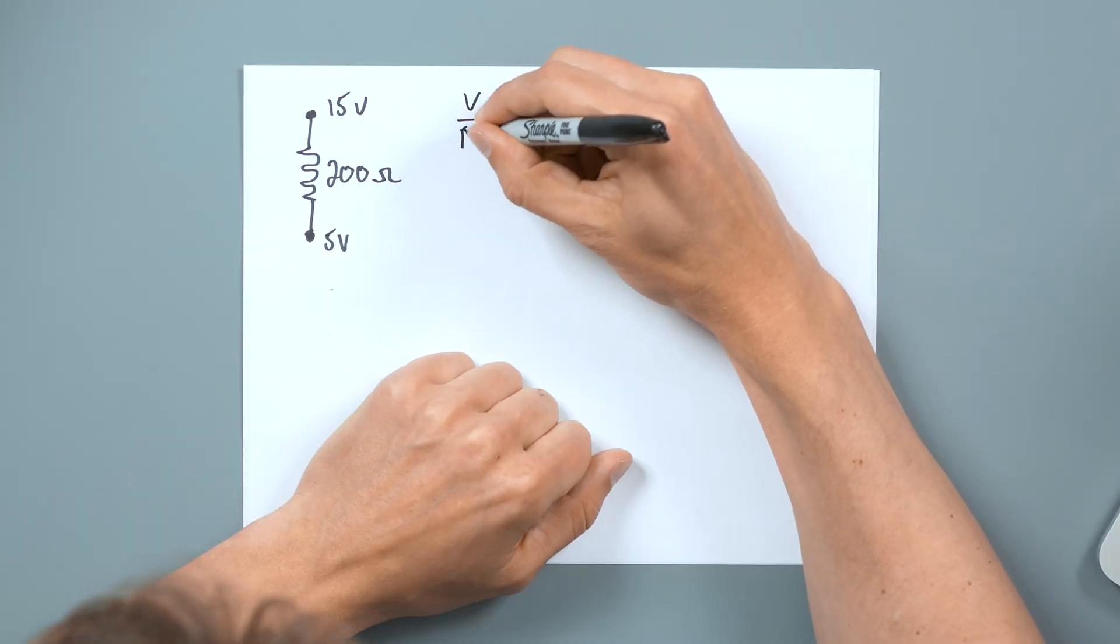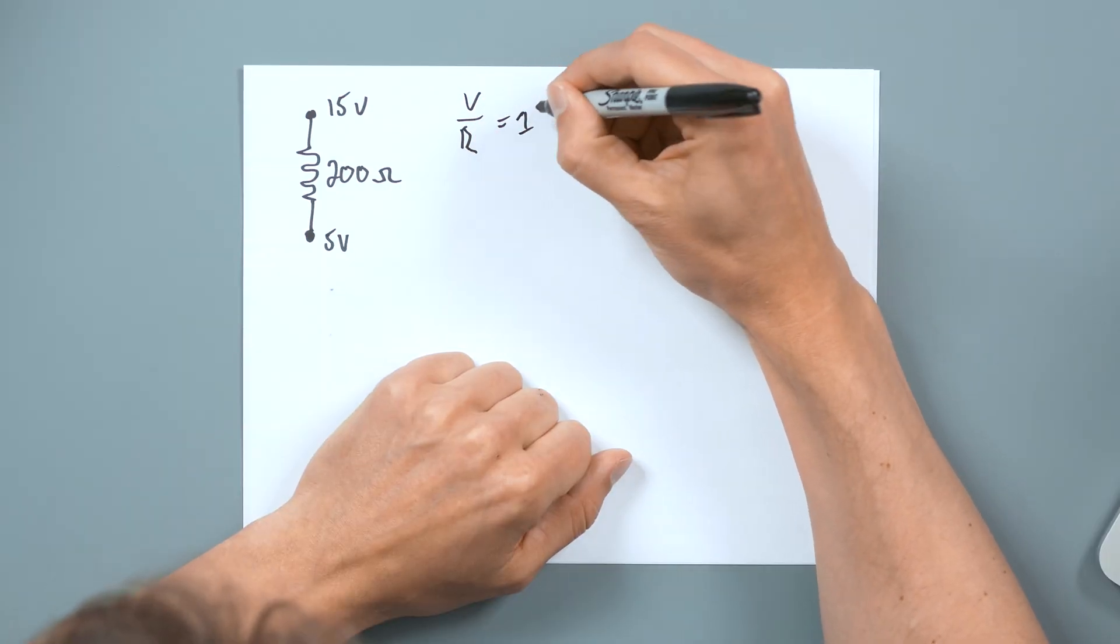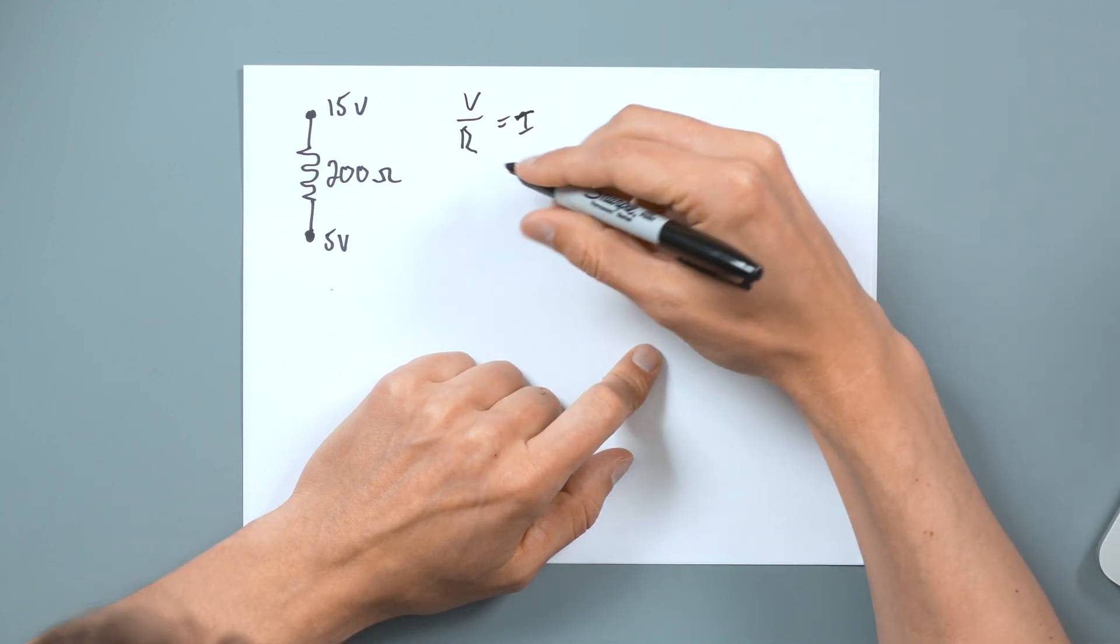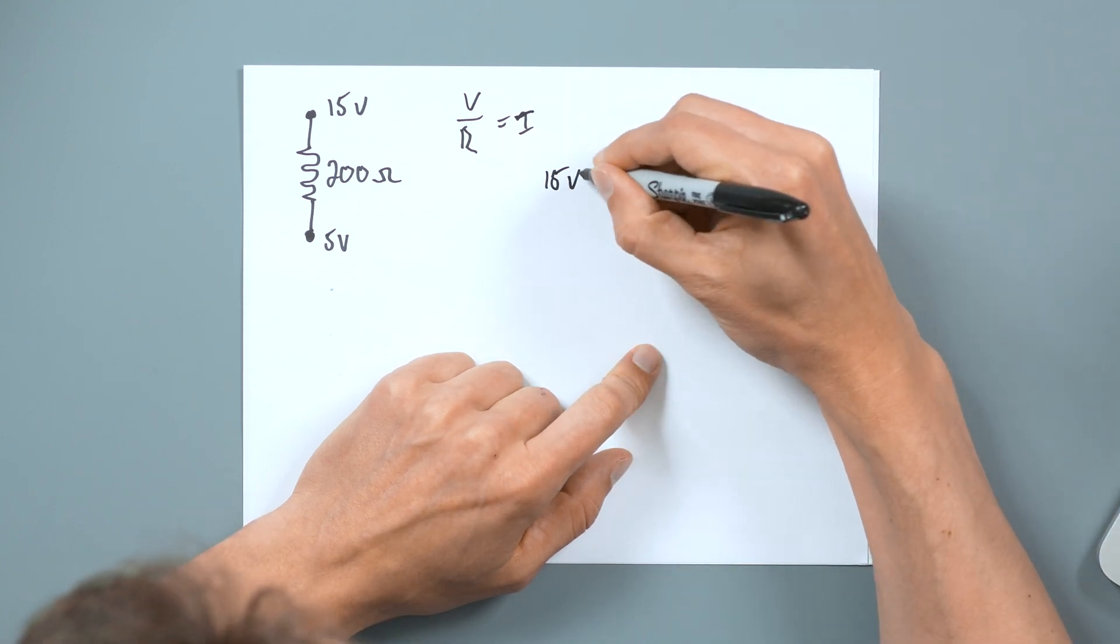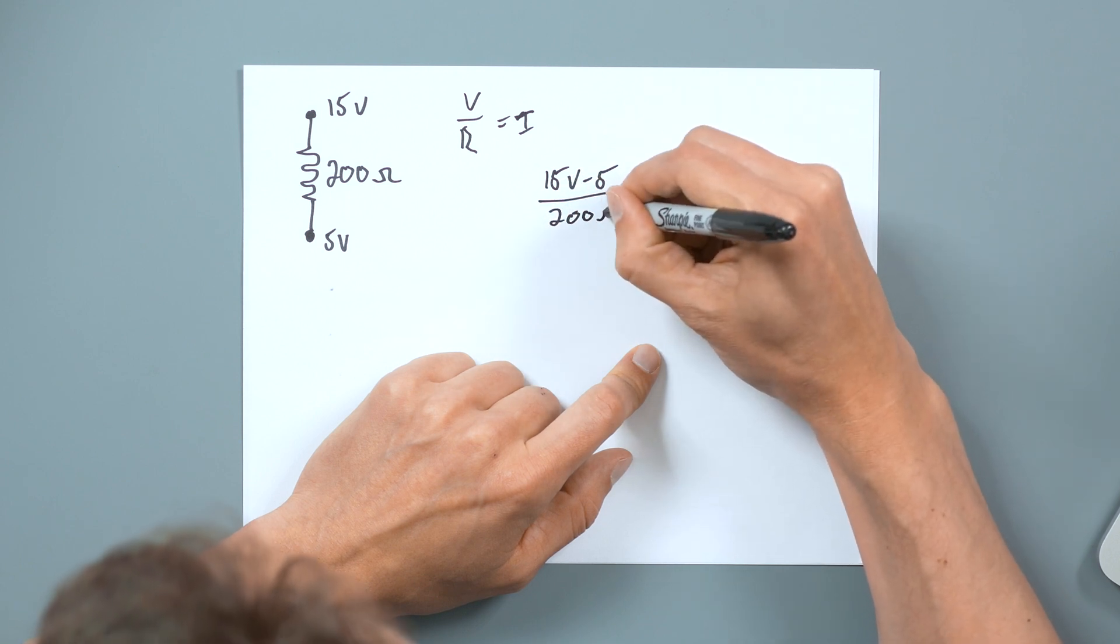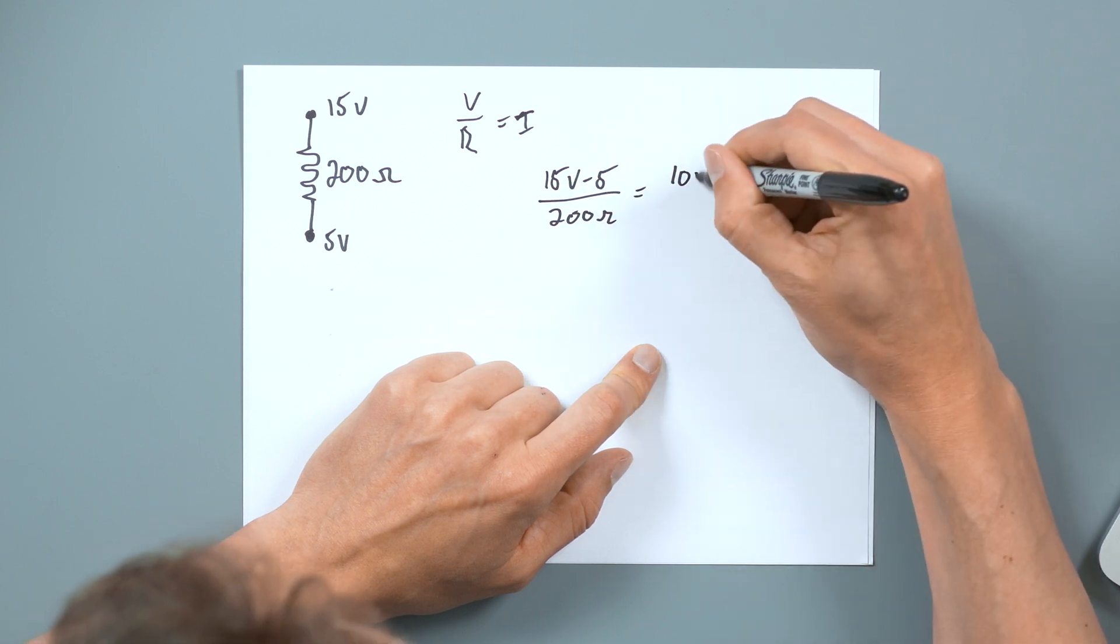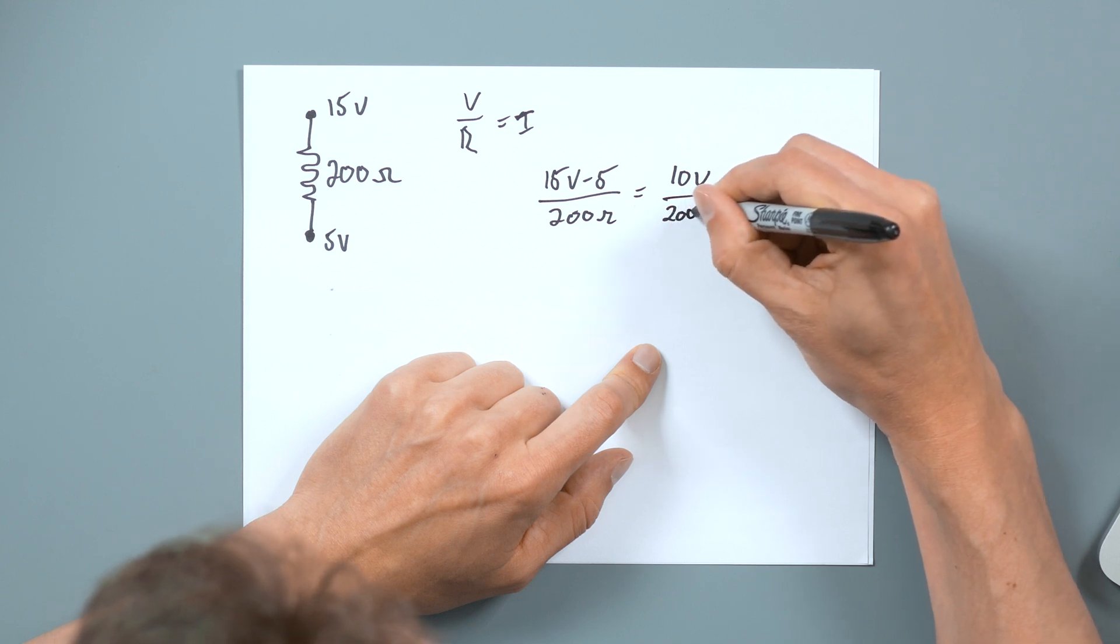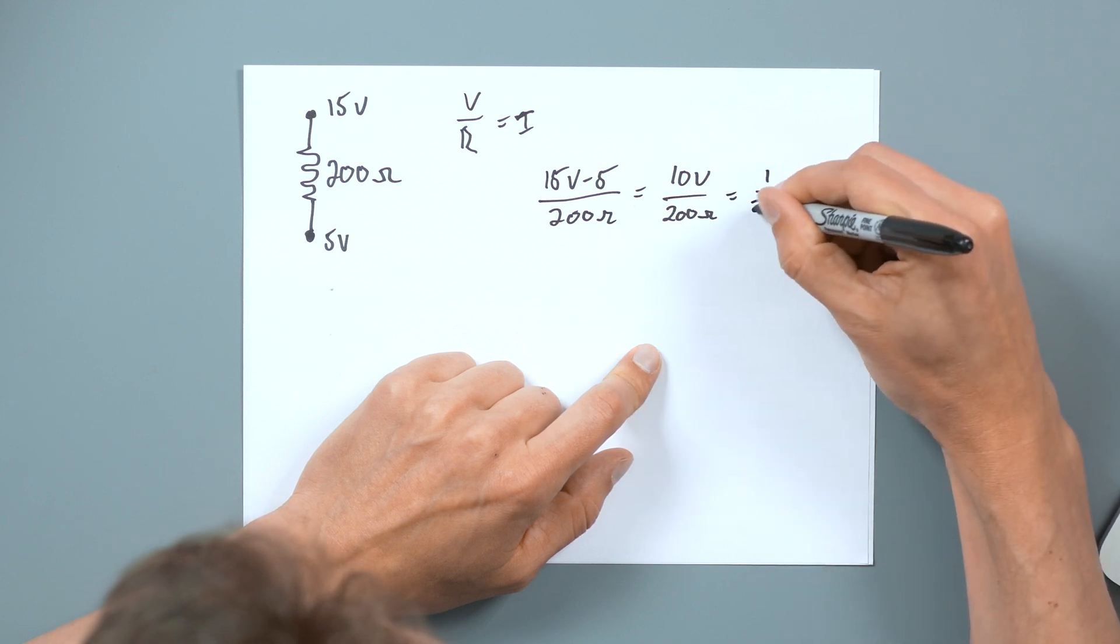So with that in mind, let's look at this. And now we are going to have our V over R equals I. But now our V is actually 15 volts minus five volts over 200 ohms, which equals 10 volts over 200 ohms.